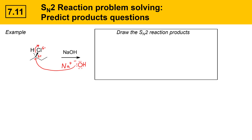Since the SN2 reaction proceeds with inversion of configuration, the nucleophile must approach from the backside of the leaving group. Since chlorine is on a wedged bond — pointing up out of the plane of the screen — the nucleophile has to come in from the opposite face, with a dashed bond orientation. In the product, the nucleophile is attached with a dashed bond, and the H gets bent up into a wedge position.